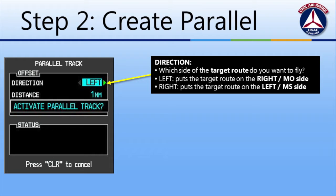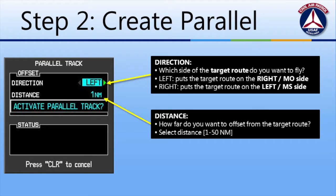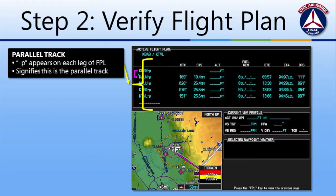The green arrow will tell you who will be looking out at the actual aircraft's track. Next, we have to decide how far offset we want to be from the actual aircraft's course. We can choose at a minimum 1 nautical mile up to 50 nautical miles. After you've made your selection, hit enter, and then enter again to activate the parallel track. This returns us to the flight plan, and we can see that all the waypoints have been updated with a dash P indicating a parallel route has been created.